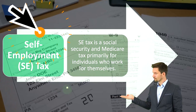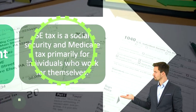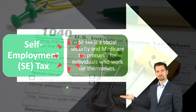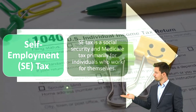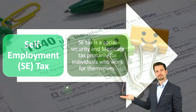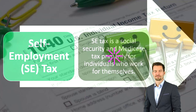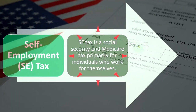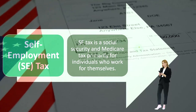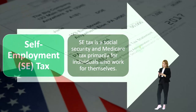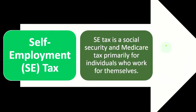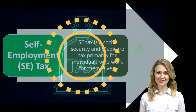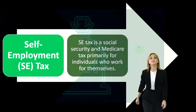We're now focused on the self-employment, or SE, tax. SE or self-employment tax is a Social Security and Medicare tax primarily for individuals who work for themselves. You might be asking: I thought we were dealing with the Form 1040 and the federal income tax — what's this self-employment tax? Let's take a step back and think about where we typically think of Social Security and Medicare taxes — as withholdings in a W-2 type of situation. If you were an employee working for an employer, we would call those payroll taxes. The payroll taxes withheld from your paycheck as a W-2 employee include the federal income tax, but also the Social Security and Medicare taxes.